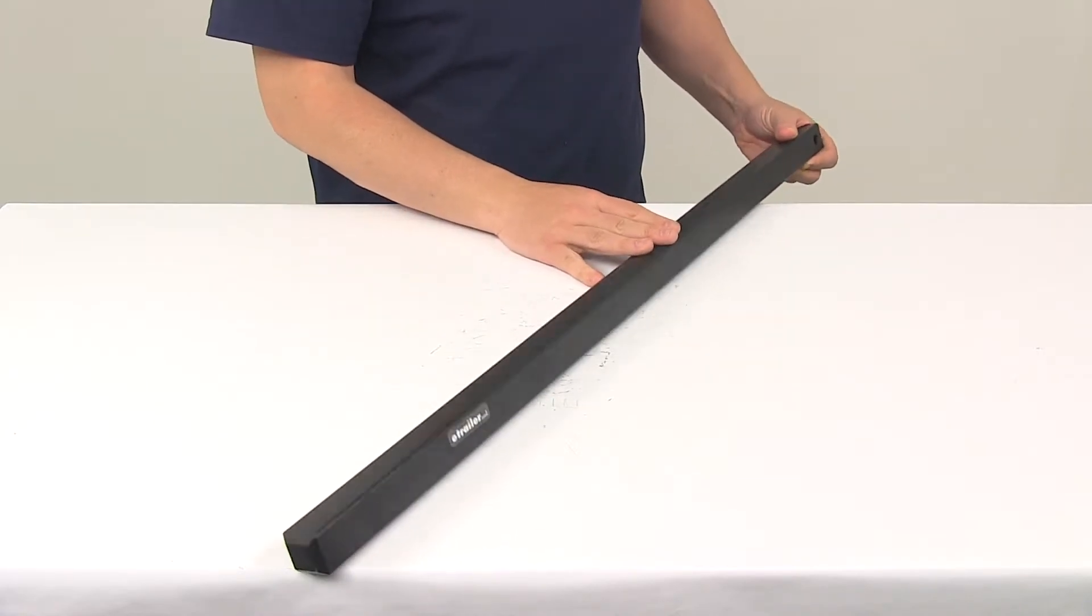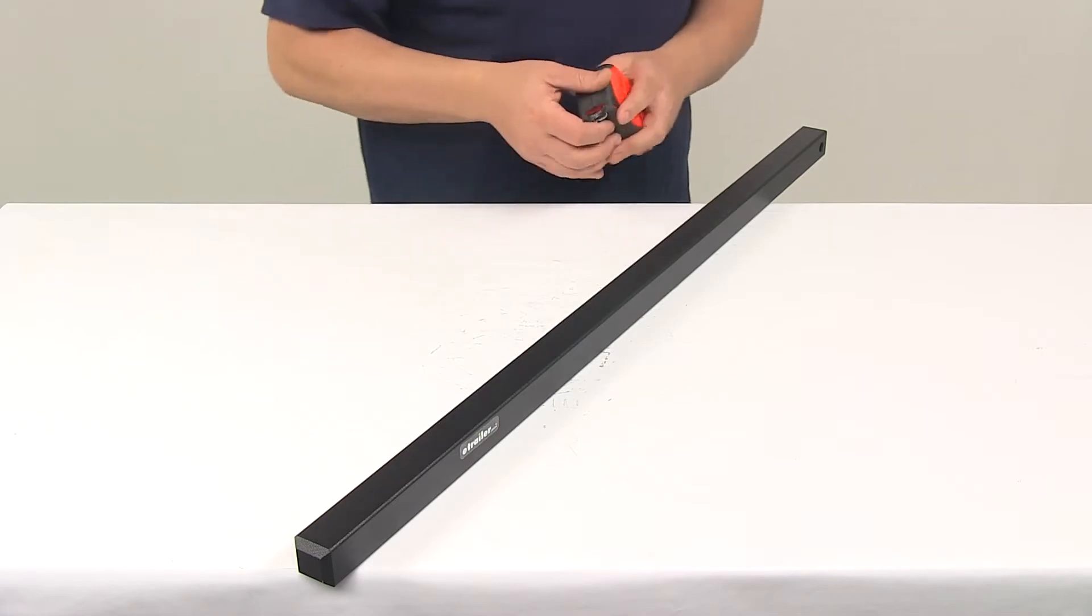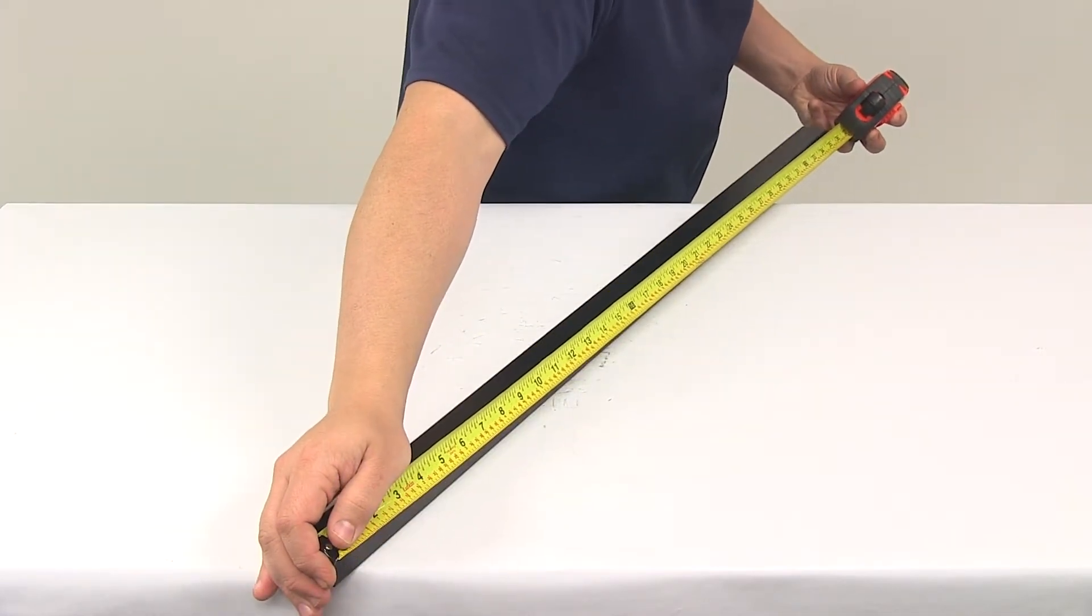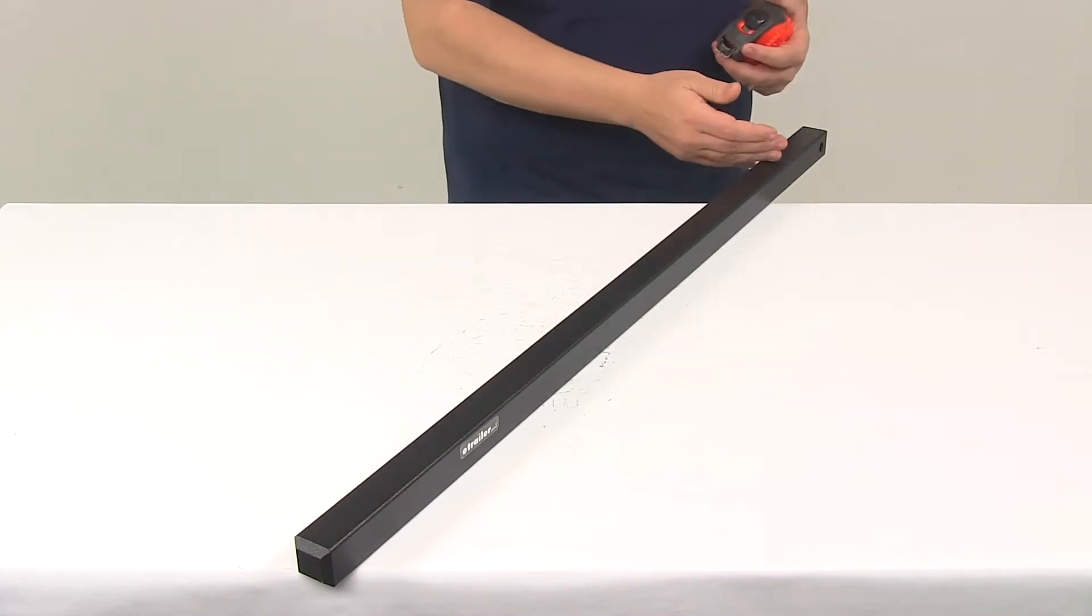maximum 1,000 pounds and the length measurement is taken from the end of the bar to the center of where the mount hole is. So this bar is a 35 inch bar.